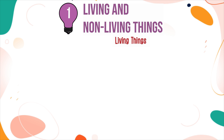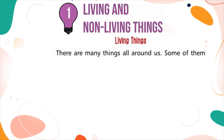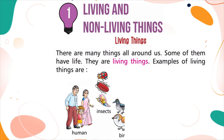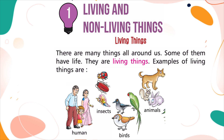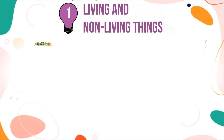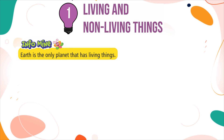Living Things. There are many things all around us. Some of them have lives — they are living things. Examples of living things are: humans, insects, birds, animals, and plants. Infomine: Earth is the only planet that has living things.